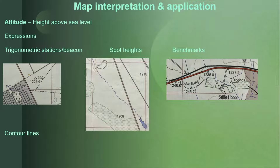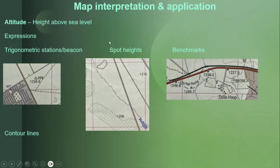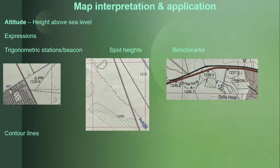Another concept you need to understand is altitude, which is the height above sea level. We need to understand this because it can be used in an exam by the examiner to calculate your gradient or distance between two points. We may ask you to find your gradient or your distance from any of these points. Altitude is height above sea level and we express this in four different forms.